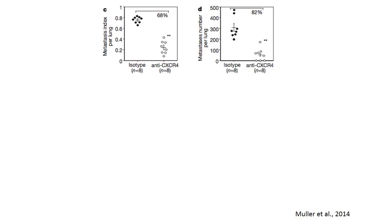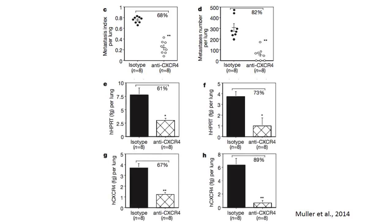Subsequent experiments similarly found that removing CXCR4 resulted in lower levels of other markers for metastasis, like HHPRT and HCXCR4. Their landmark results set the foundation for further studies into the various pathways of CXCR4 receptors.